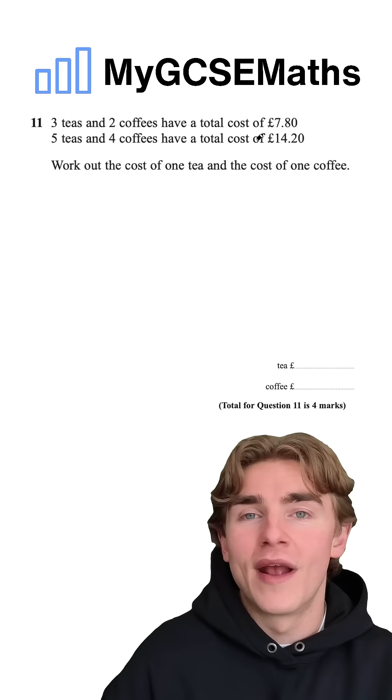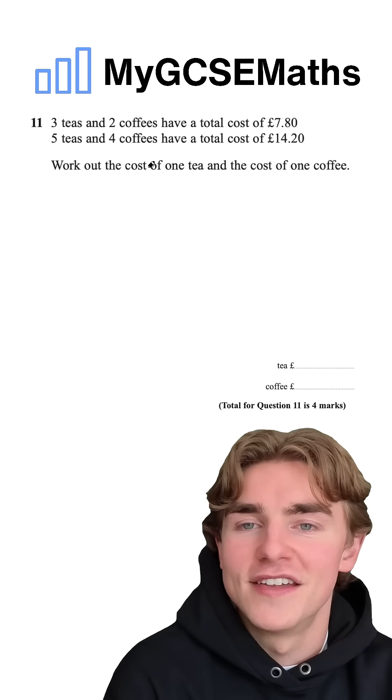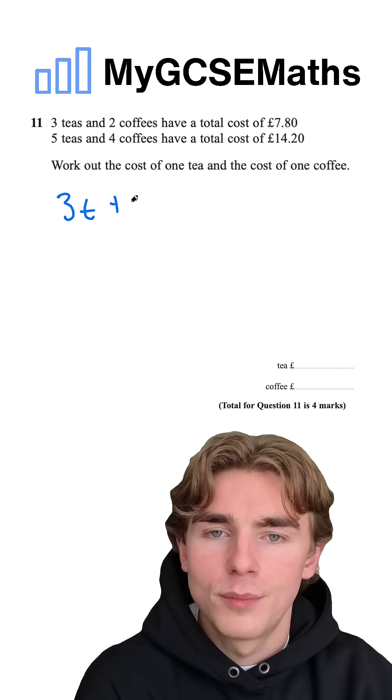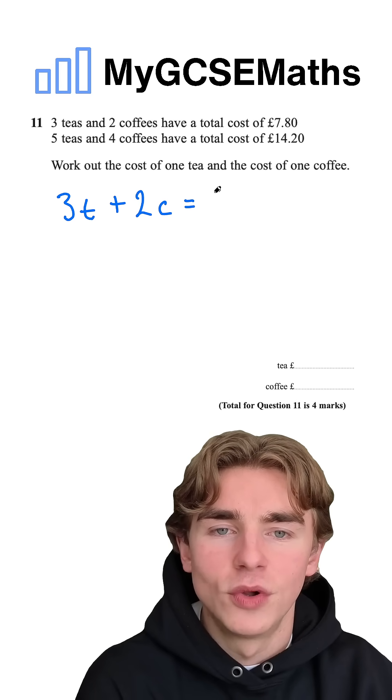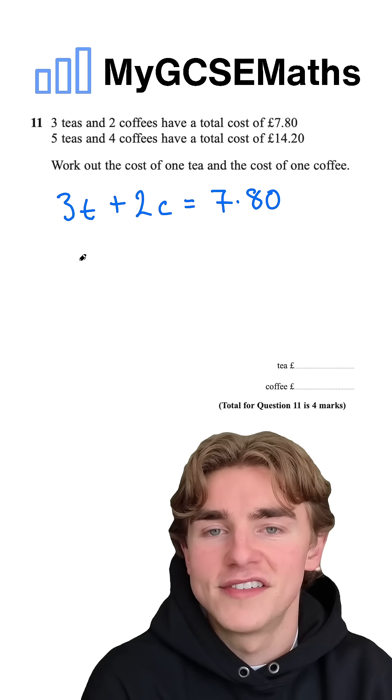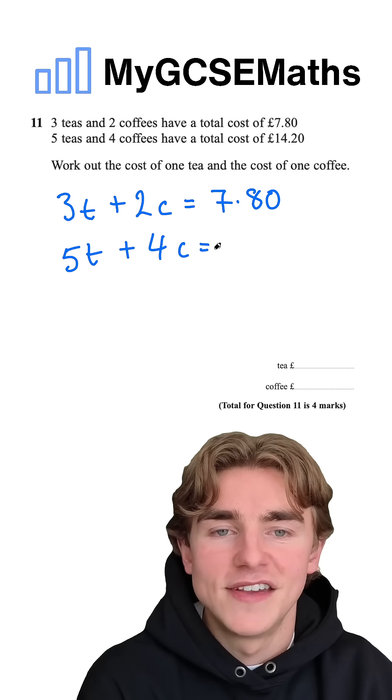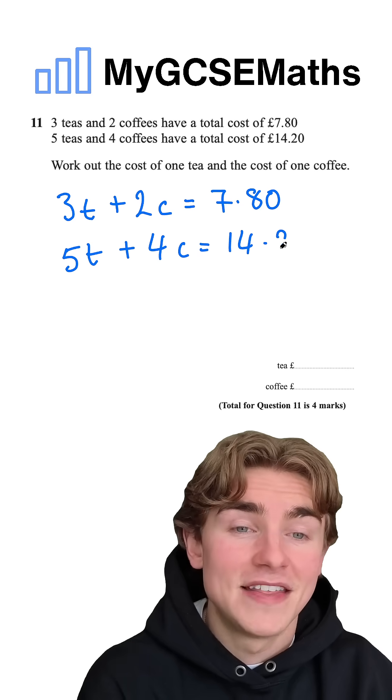Guys, what are we going to do? In this case, we're going to set up a pair of simultaneous equations. So 3t plus 2c equals £7.80 and 5t plus 4c equals £14.20.